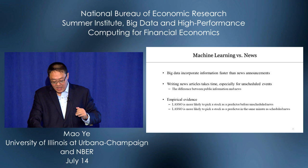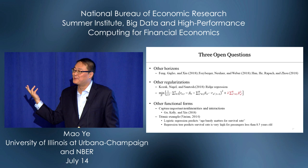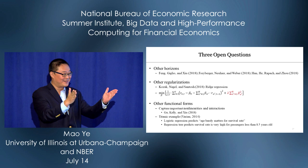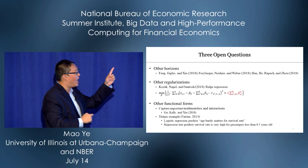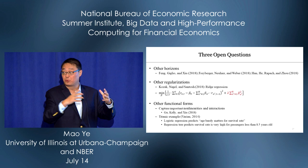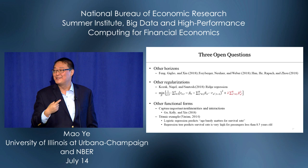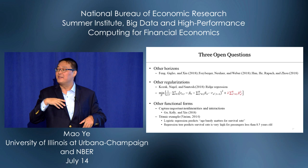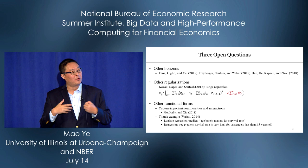There are at least three open questions. Number one: other horizons — Alex, Anna, and I started at minute-by-minute, but there's a huge spectrum between one minute and one month. There are three nice papers on monthly horizons, but what economic signals does LASSO capture in between? Number two: other regularizations — for example, ridge regression uses the squared beta as a penalty, versus LASSO's absolute value. Number three: other functional forms — Gu, Kelly, and Xiu show that regression trees and neural networks can capture important nonlinearities and interactions.